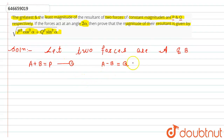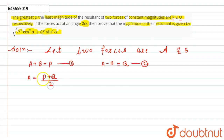Let's call these equation one and equation two. Solving equations one and two together, we get the values of a and b: a equals p plus q divided by two, and b equals p minus q divided by two.